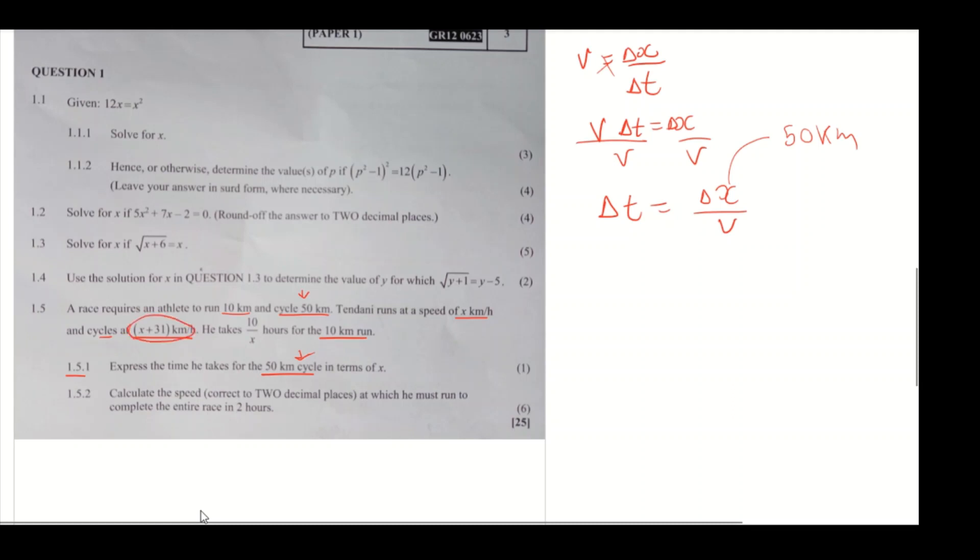So it's 50 kilometers over x plus 31 kilometers per hour. This change in time is going to be in hours, so it's 50 over x plus 31 hours. This is the change in time that this question is looking for.